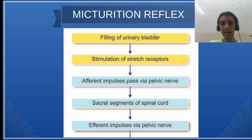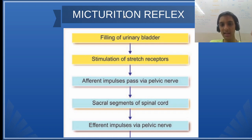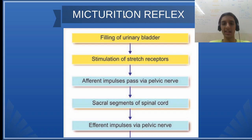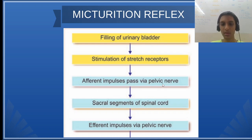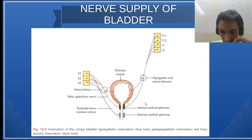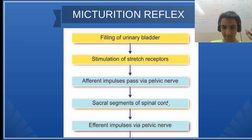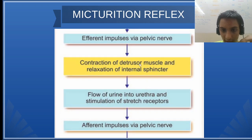Let us see a simple flow chart regarding the micturition reflex. First, the filling of the urinary bladder — let us assume that pressure and volume start at zero. The urine starts coming into the bladder, causing stimulation of stretch receptors, making space for urine to fill. Then afferent impulses travel via the pelvic nerve from the sacral segment. Then efferent impulses cause contraction of the detrusor muscle and relaxation of the internal sphincter.